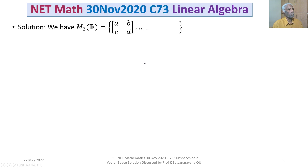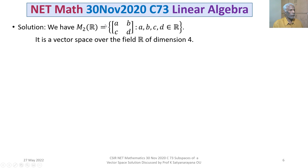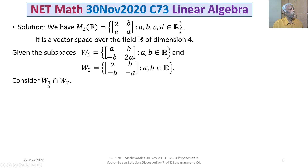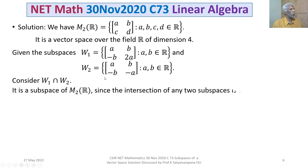We now discuss the solution in detail. M2 over R is the set of all 2×2 matrices [A, B; C, D] where A, B, C, D belong to R. It is a vector space over the field R of dimension 4. Given the subspaces W1 and W2, consider W1 ∩ W2. Since W1 and W2 are both subspaces, their intersection is again a subspace of M2 over R.